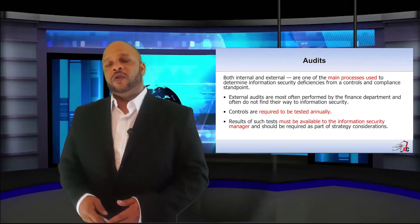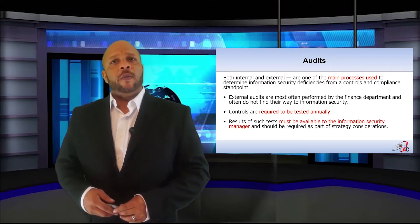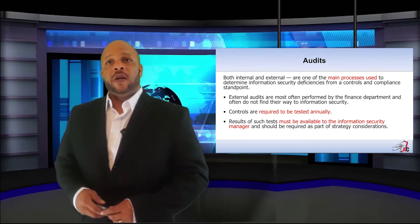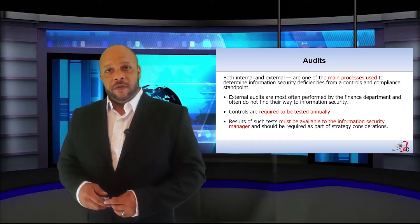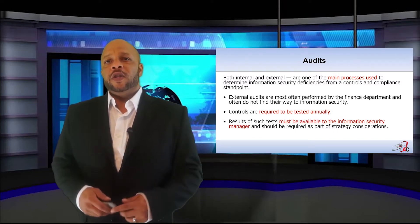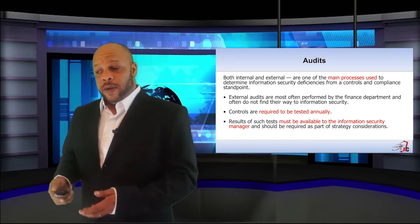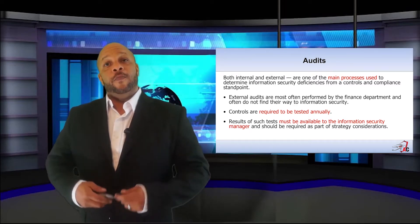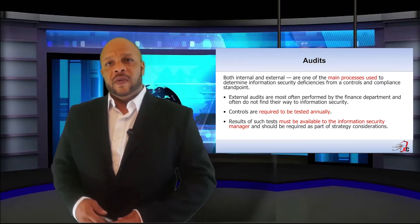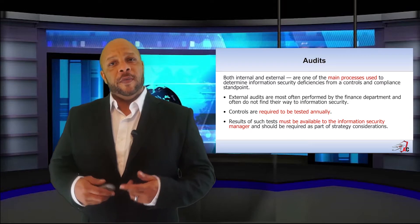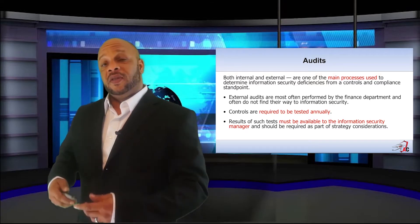We're going to talk about some of the methods and procedures that we need, starting with audits. Both internal and external audits are probably the main process used in many organizations to find security deficiencies. External audits, most often performed by the finance department, usually never even find their way to the information security manager's desk. The controls are required to be tested at least annually, and the security manager must be involved. The results of these tests must be made available to the information security manager to make sure that the program is working as designed and as indicated to the C-level executives.